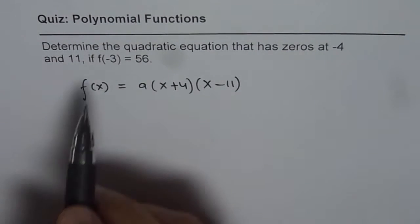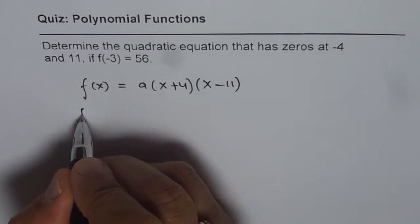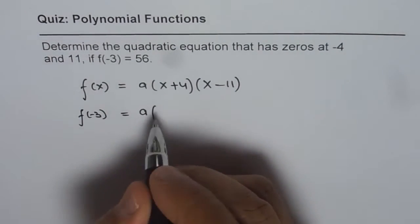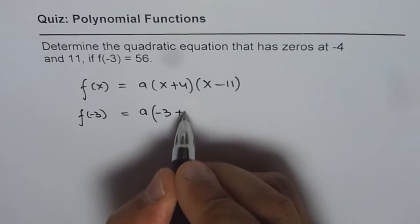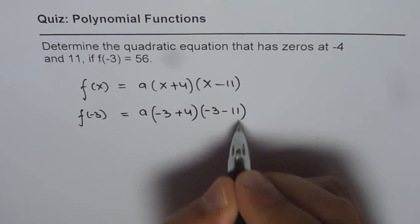Now we are also given f(-3) is 56. With that we can find the value of a. So f(-3) equals to a times, we can replace x with -3. So we get -3 plus 4, -3 minus 11.